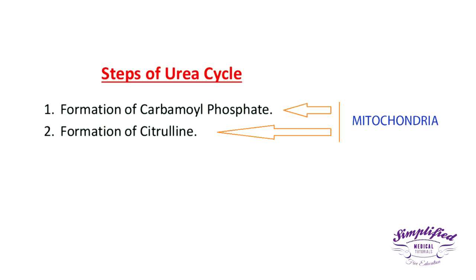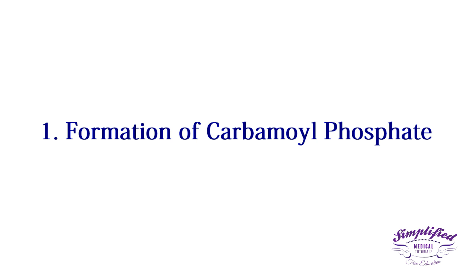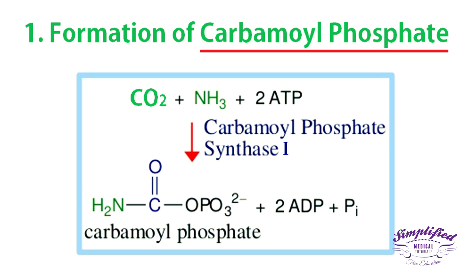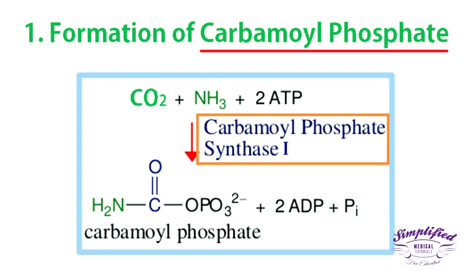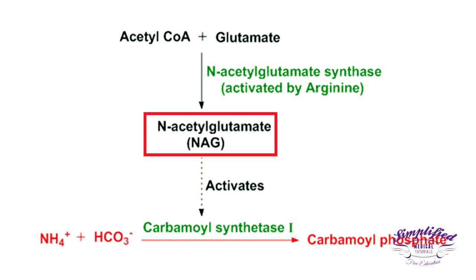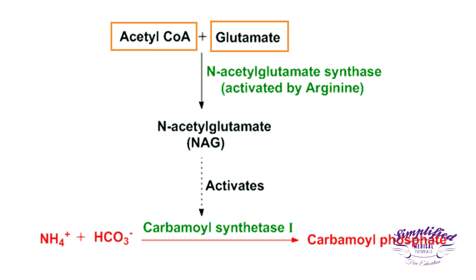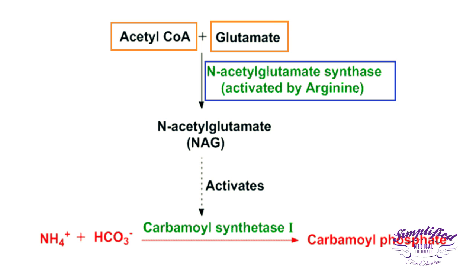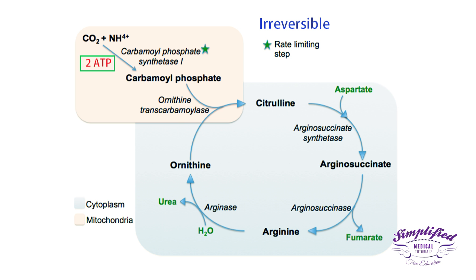The first step is the formation of carbamoyl phosphate. Carbamoyl phosphate is synthesized from ammonia and carbon dioxide in the presence of the enzyme carbamoyl phosphate synthetase 1 (CPS1). CPS1 requires activation by N-acetylglutamate, which is the positive allosteric activator of this enzyme. N-acetylglutamate is synthesized from acetyl coenzyme A and glutamate by N-acetylglutamate synthetase.